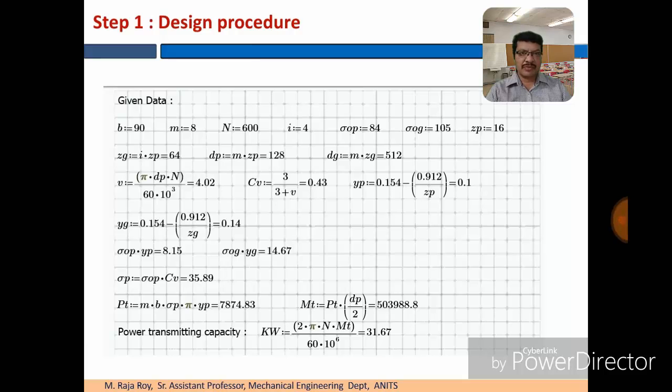You have to check the product of sigma op into Yp and sigma og into Yg. Which one is less, you have to observe. And based on that you have to continue the design. For pinion, sigma op into Yp value is less. So you have to continue the design based on the pinion. Sigma p equal to sigma op into Cv. Then find the tangential component. Tangential component of tooth width for Pt is nothing but beam strength in this case. That is Pt equal to m b sigma p pi into Yp.